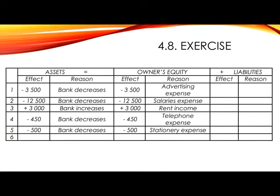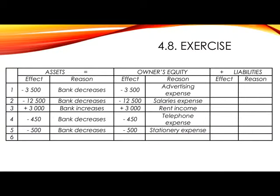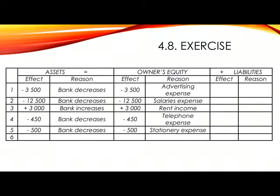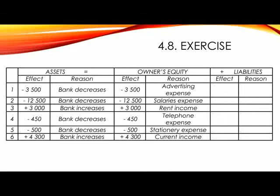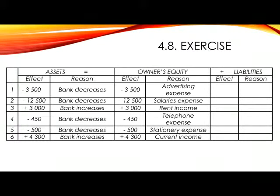Number 6. Cash received for services rendered, 4,300 rand. If the business has rendered or provided a service to a customer, we will put this into our current income account, which increases equity. The other account, of course, is bank. In assets, we will show plus 4,300 as bank increases, and in equity, plus 4,300 for current income.